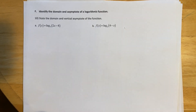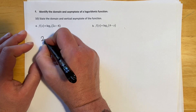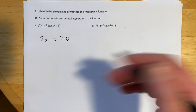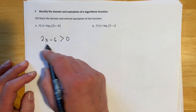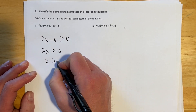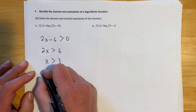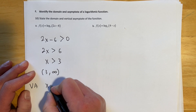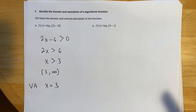For the domain problems: take 2x - 6 > 0 (can't put negatives into logs). Add 6: 2x > 6. Divide: x > 3. So the domain is (3, ∞), with a vertical asymptote at x = 3. The domain and vertical asymptote go together the same way that range and horizontal asymptote work together for exponentials.